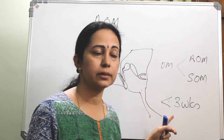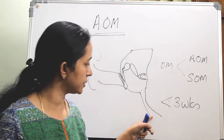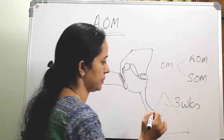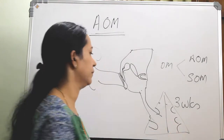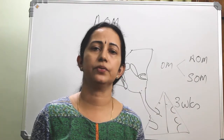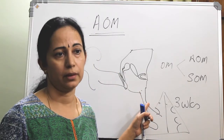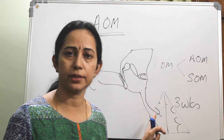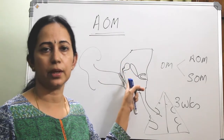Only through the eustachian tube opening is the middle ear space communicating with the exterior or the atmosphere, and this opens into the nasopharynx. The main predisposing factor for acute otitis media is eustachian tube dysfunction. Any infections in the nose and nasopharynx causing eustachian tube dysfunction will predispose to acute otitis media.